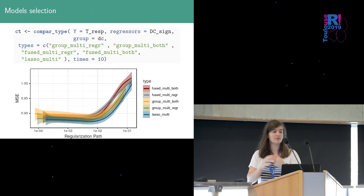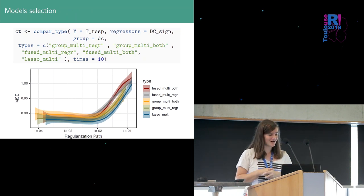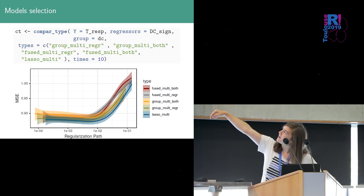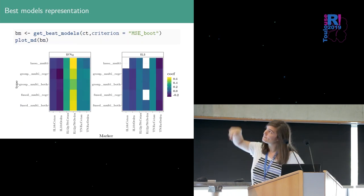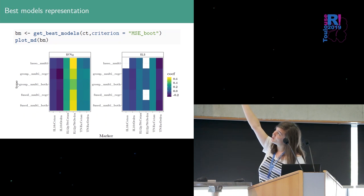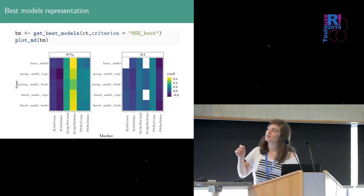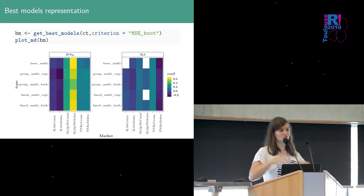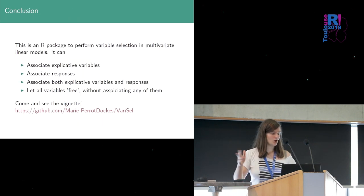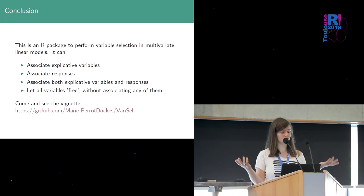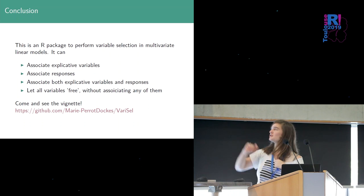So there is another function compare types that allow us to compare different types so this took pretty much the same matrices than in a train varicel but also different types and here we plot the mean square error of regression in order to choose the best model we can also plot the best model for each of the type which we choose according to one criterion that there is several criterion here it's a toy example so it select everything but if you have more complicated models you have more differences between two different types. So to conclude this is an R package to perform variable selection in multivariate linear model it can associate explicative variable it can associate responses or both explicative variable and responses or let all variables free then if you have any questions you can come see the vignette and you can find me somewhere thank you.